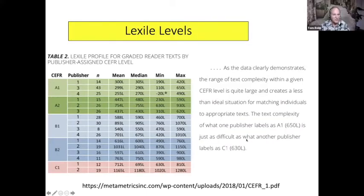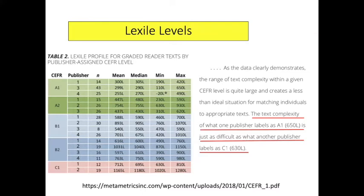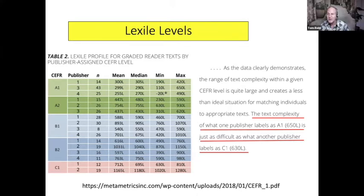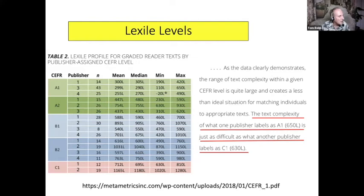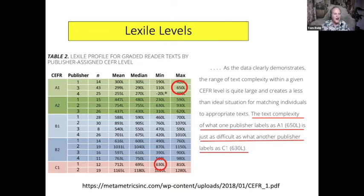Concerning the Lexile levels — this actually states that the text complexity of what one publisher labels as A1 is just as difficult as what another publisher labels as C1. This table and statement were written by the president of the Lexile company, so they themselves agree that it just doesn't work for graded readers. One publisher has a book at A1 and another has a book at C1, and they're both 630 or 650 on the Lexile scale. So it just doesn't work for graded reading.